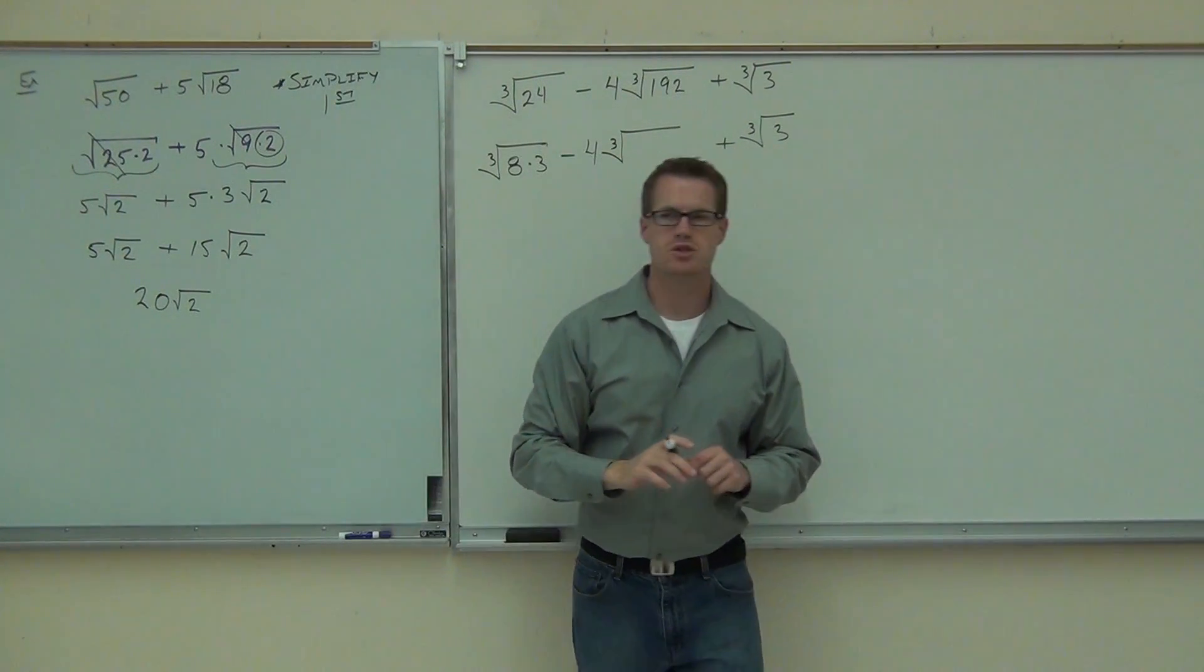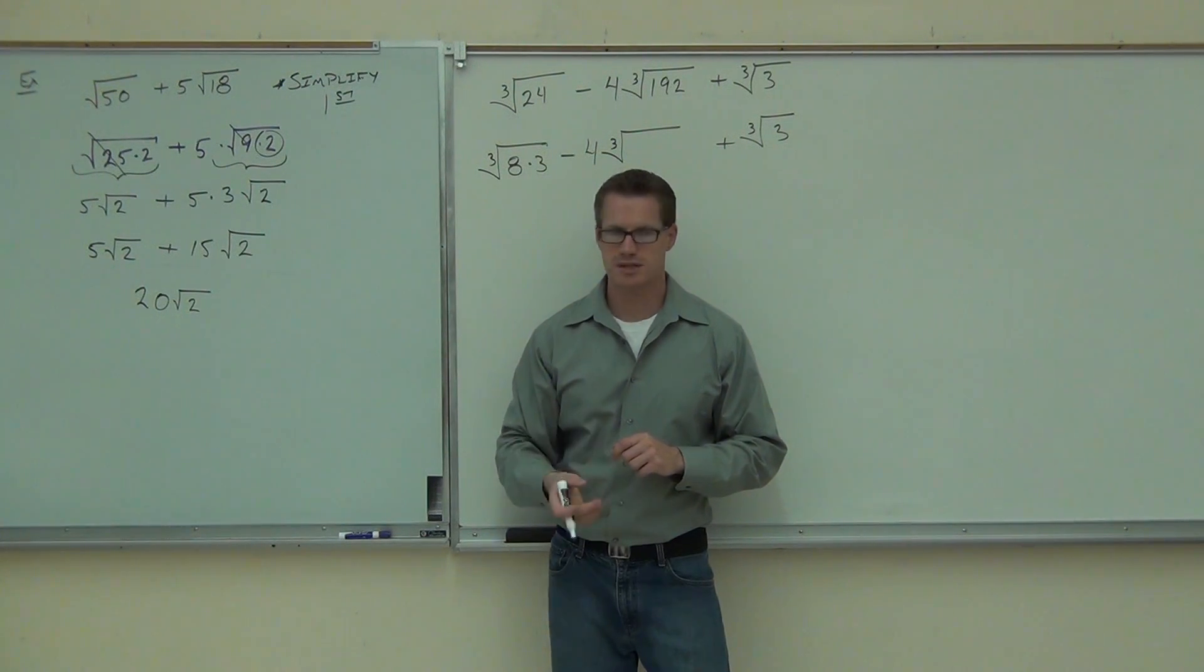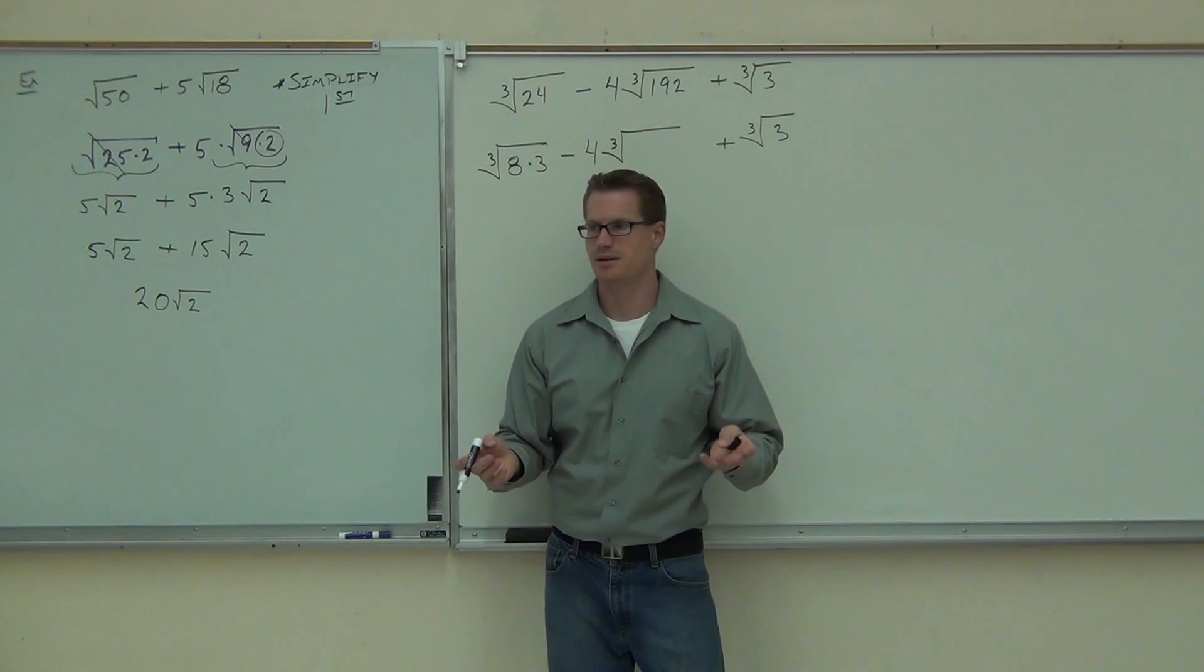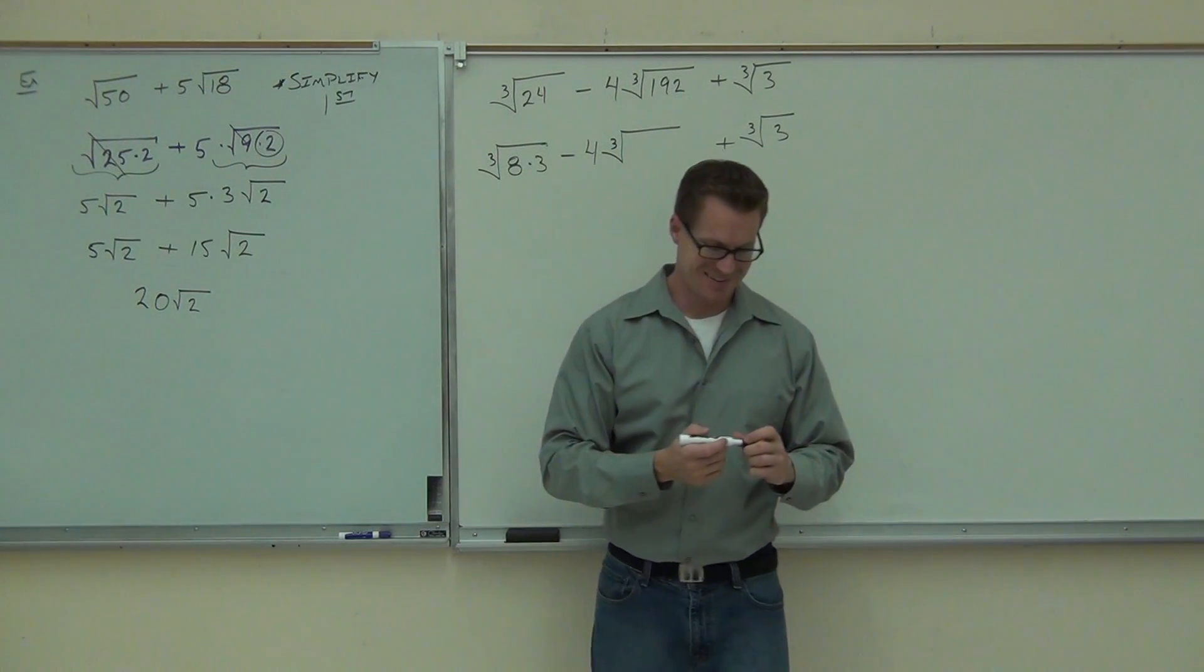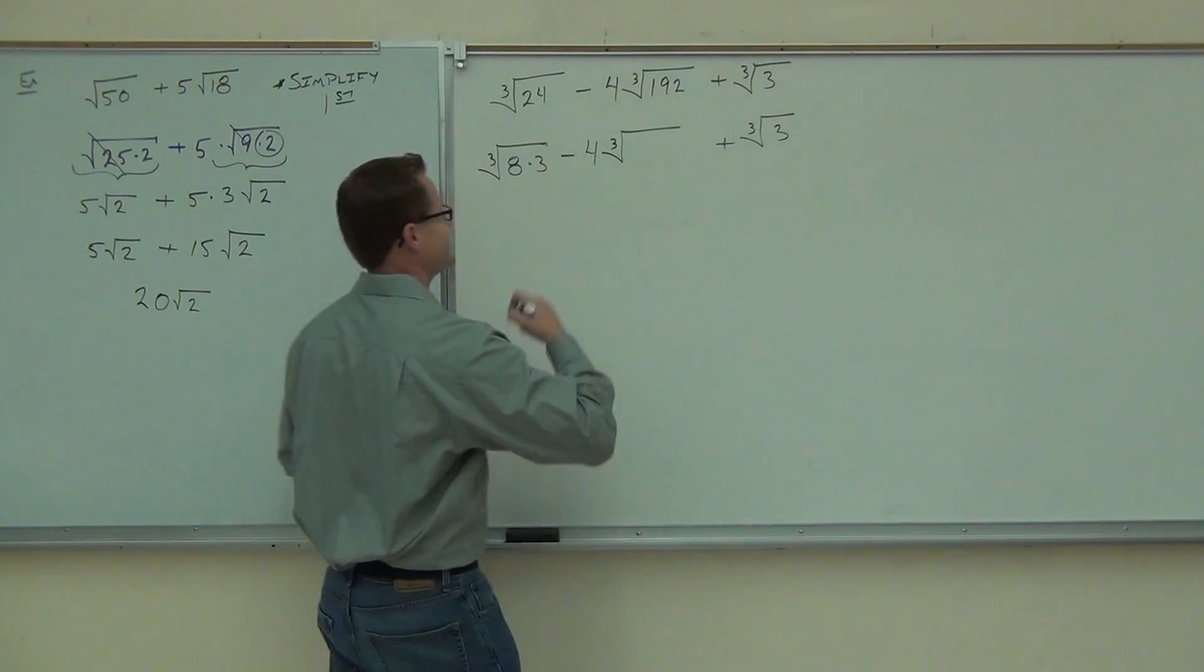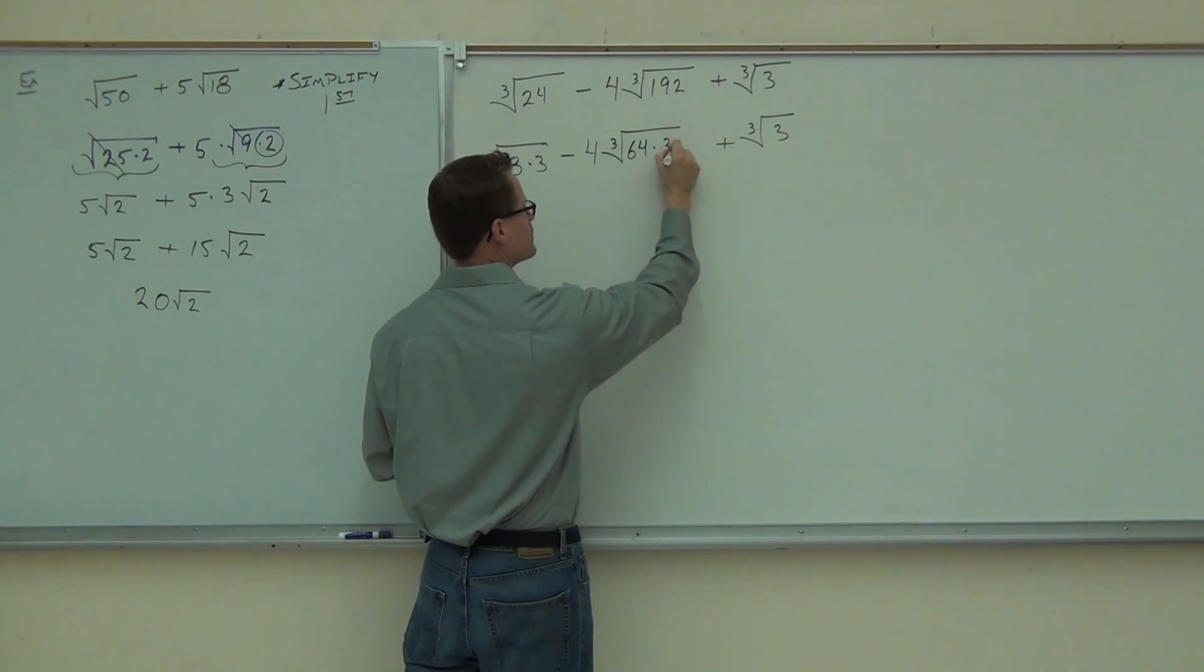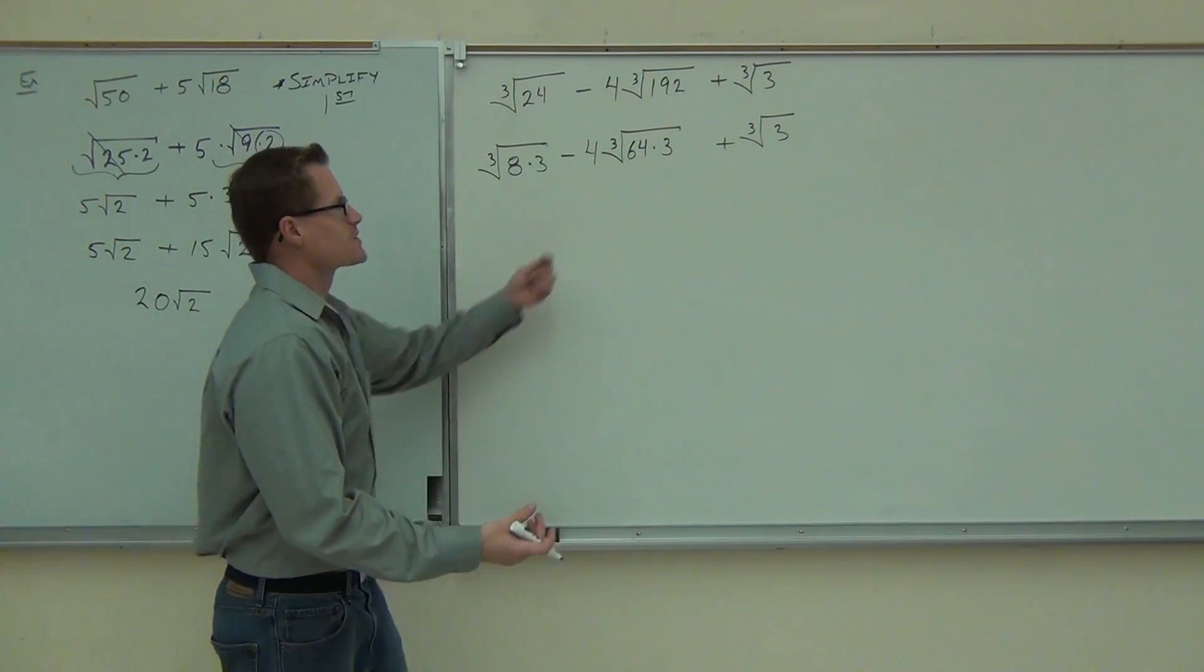But remember, there's only a couple numbers you can even check. You can check 8, you can check 27, you can check 64. Start with the big ones. Start with 64. Does 64 work? No. Try 27 then. Does 27 work? Yeah. I don't know. I have no idea. Divide it and you get calculators. I don't. 64 does work. I thought you scared me. What, times 3? Yes.